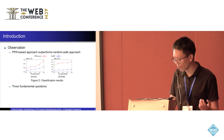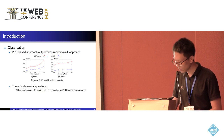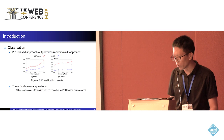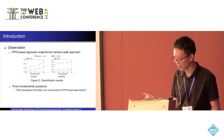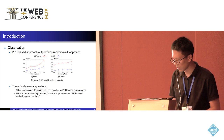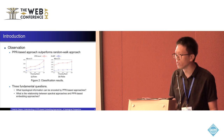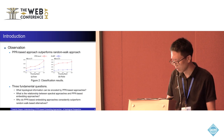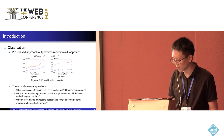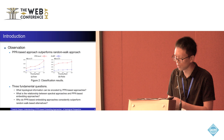We focus on three fundamental questions. First, what topological information can be encoded by PPR-based embeddings? Second, what is the relationship between spectral approaches and PPR-based embedding approaches? And third, why do PPR-based embeddings consistently outperform random walk-based alternatives?